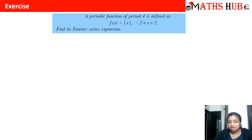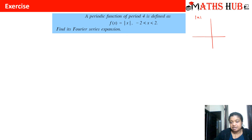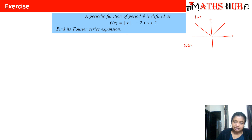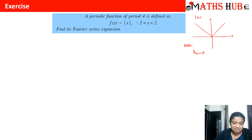There is a DIY exercise for you. A periodic function of period 4 is defined as f(x) = |x| in the interval -2 to 2. Find its Fourier series expansion. Hint: if you draw the graph of |x|, you can see it is symmetric about the y-axis, so it is an even function. For an even function, bₙ = 0 automatically, so you just need to calculate a₀ and aₙ. Please share your answers in the comment section.